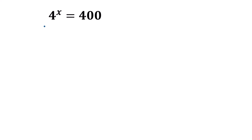Hello everyone. In this video I am going to show how to find the value of x where 4 to the power x is equal to 400. Taking log of both sides, we can write the left side as log of 4 to the power x is equal to the right side, which will be log of 400. Applying the logarithm formula: log of a to the power b is equal to b times log of a.